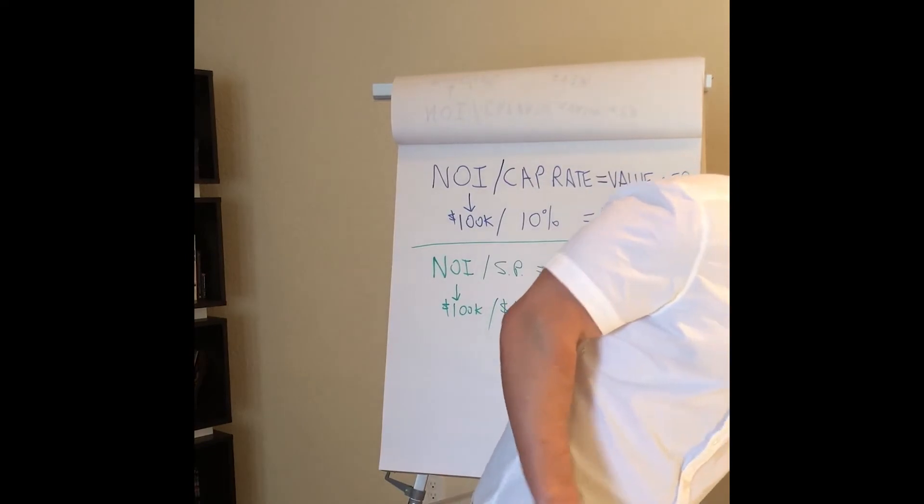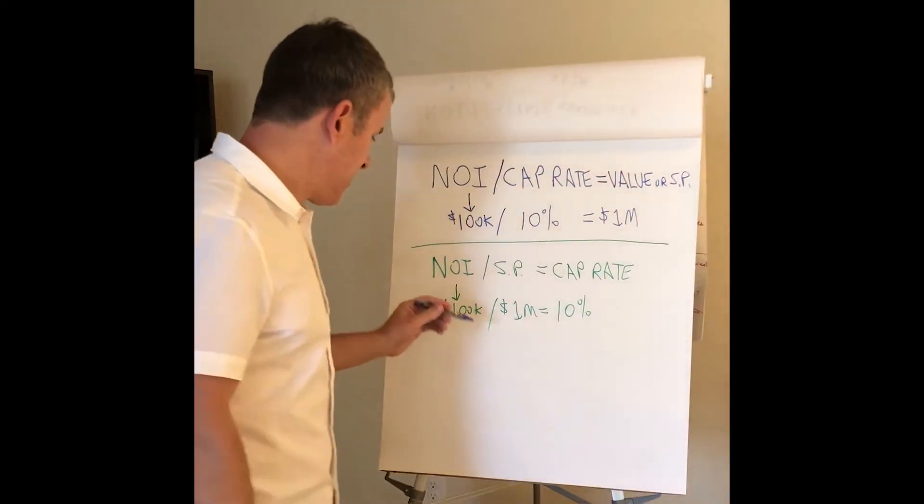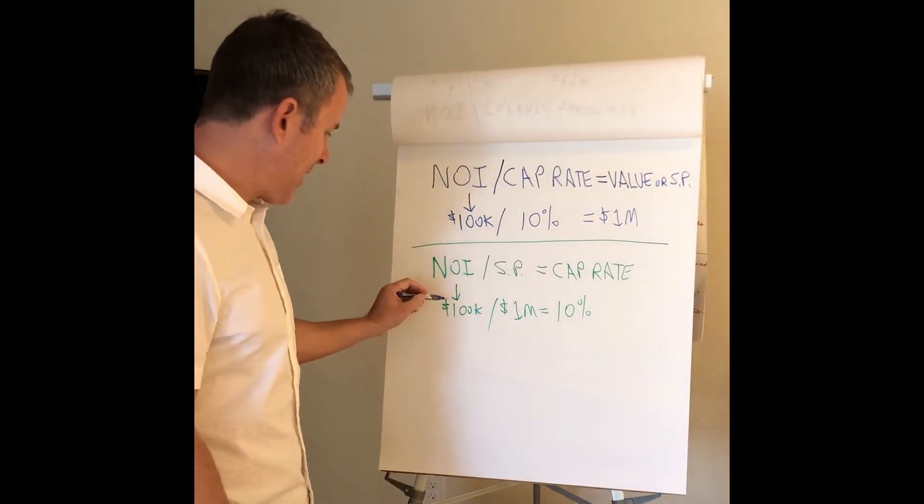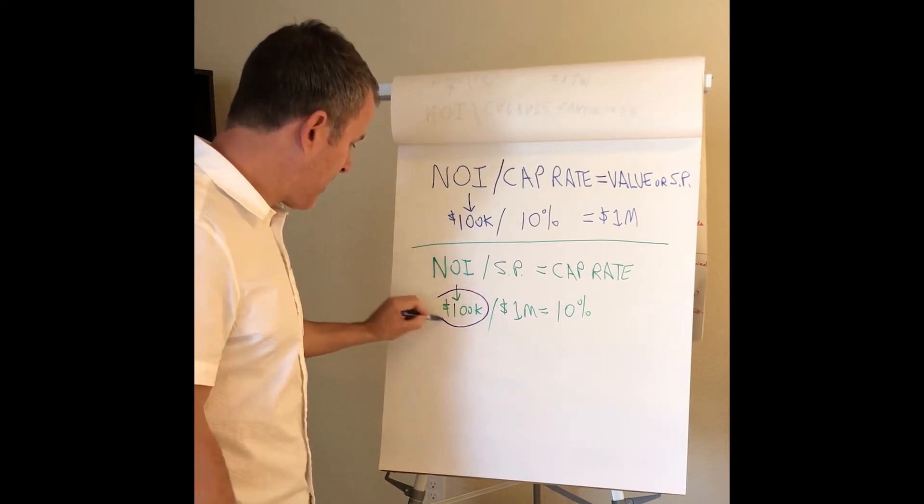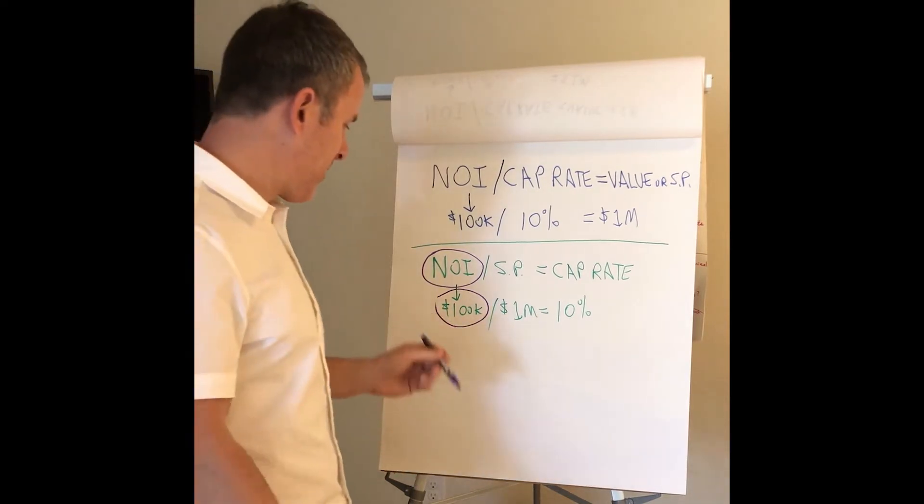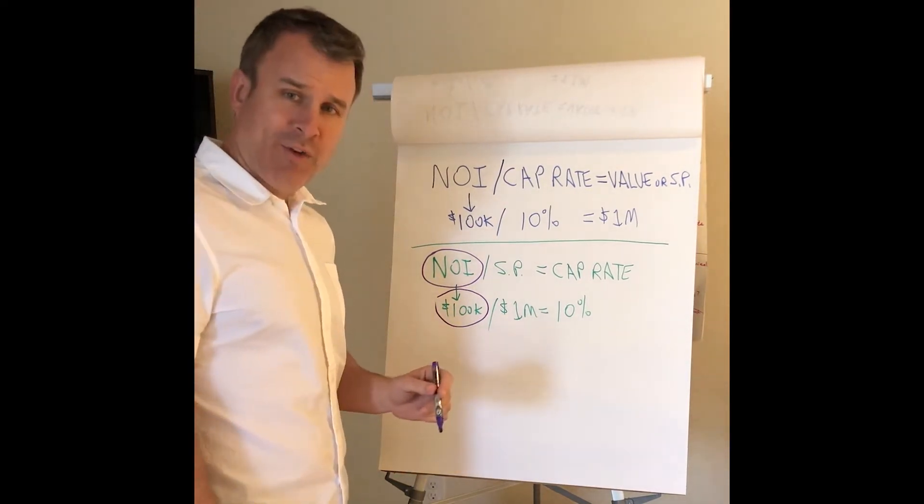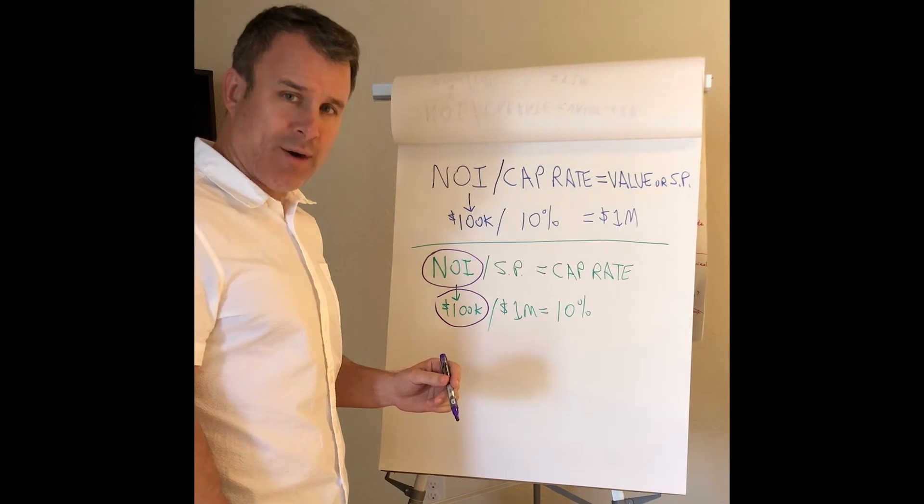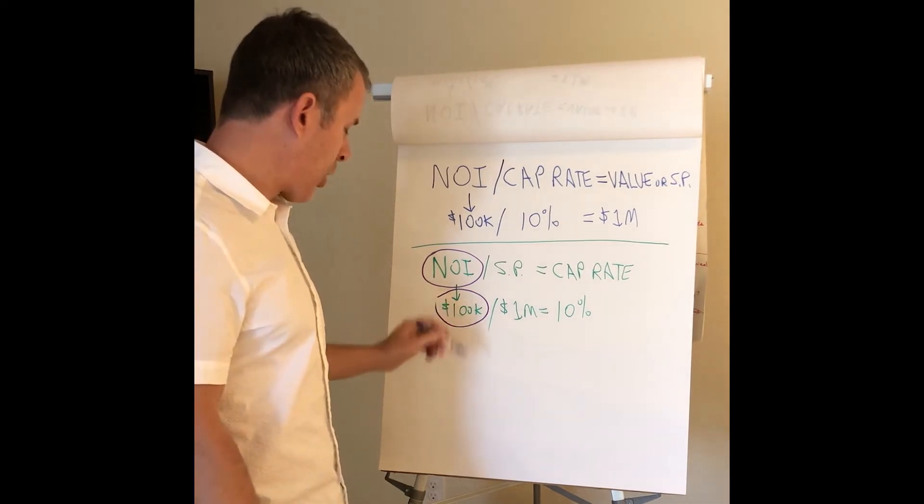Except for a very common mistake in my mind people make is around the NOI. I have $100,000. I got that from, let's say from the T12, trailing 12, profit and loss statement from the current seller. That's current.